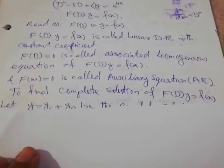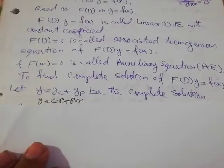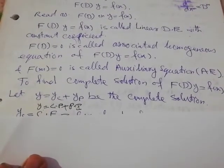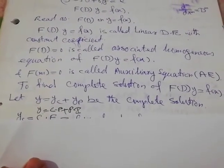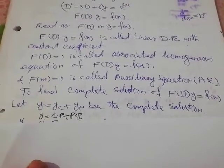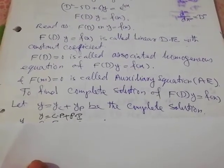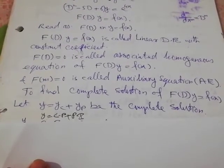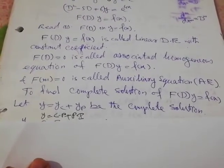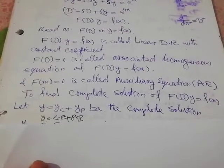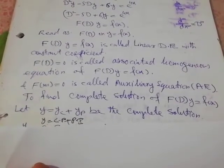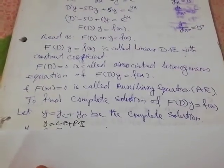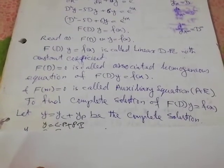To find the complete solution of f(D)y = f(x), we suppose that y equals the complementary function plus the particular integral. So there are two terms: one is the complementary function (yc) and the other is the particular integral (yp).